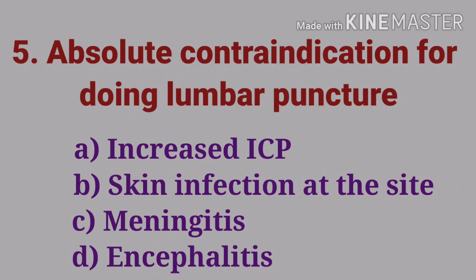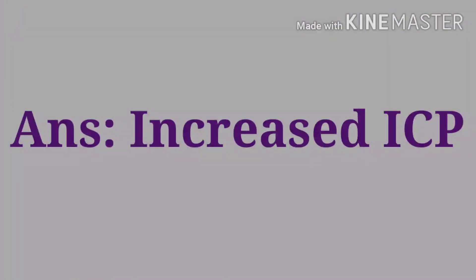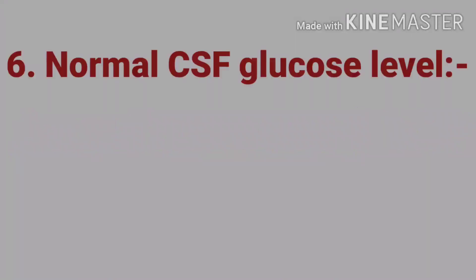The fifth question: absolute contraindication for doing lumbar puncture — options are increased ICP, skin infection at the site, meningitis, and encephalitis. The answer is increased ICP. In the case of increased ICP, there is a chance of brainstem herniation.